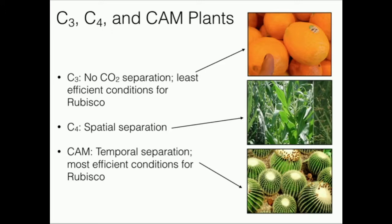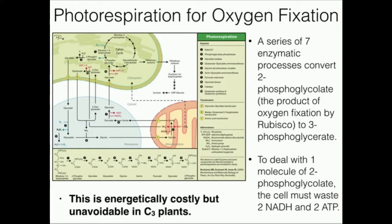When we say C3, what we actually mean is that we're going to be doing most of our metabolism on three carbon molecules. When we have C4, that means we're going to be doing metabolism on some four carbon molecules. CAM stands for crassulacean acid metabolism. The C4 plant and the CAM plant have ways of getting around the oxygenase activity of rubisco, whereas C3 plants have no way of getting around it.